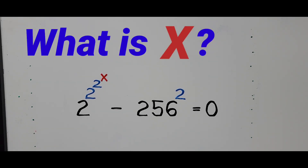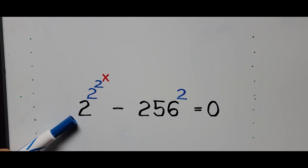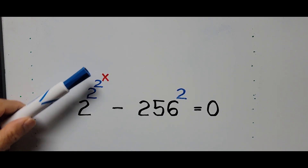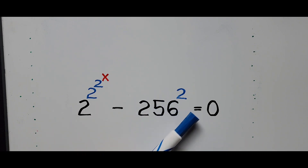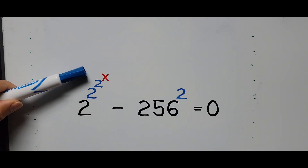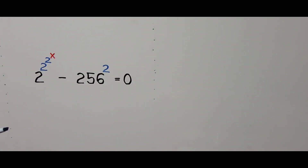Hello everyone, welcome to Quasiano Easy Math. We have another exponential equation to solve with a nested exponent: 2 to the power of 2 to the power of 2 to the power of x, minus 256 squared, equals 0. We're going to find the value of x. For those new to my channel or who have not subscribed yet, please don't forget to like and subscribe for more videos.